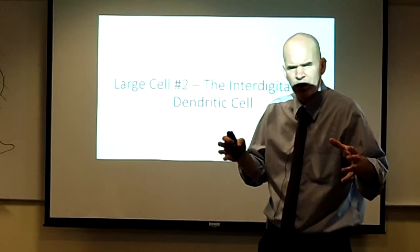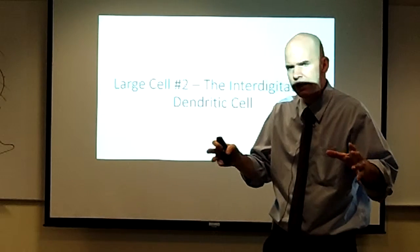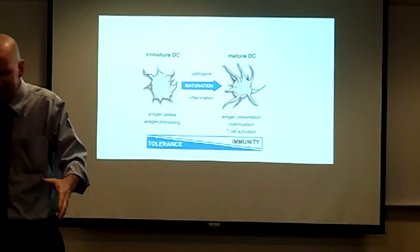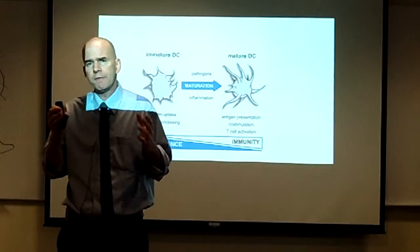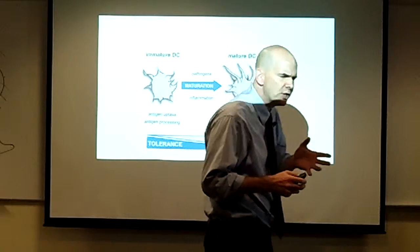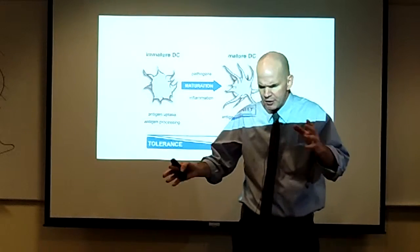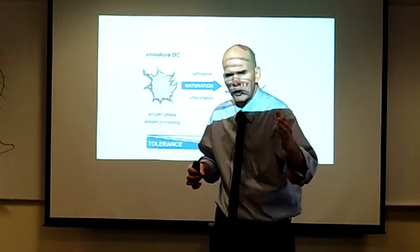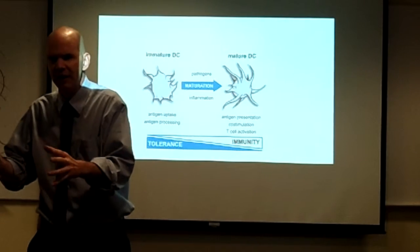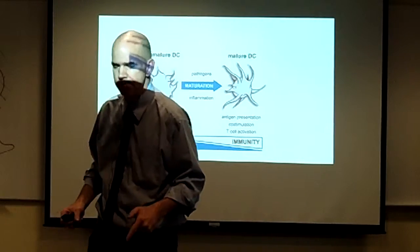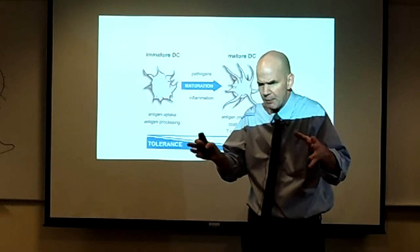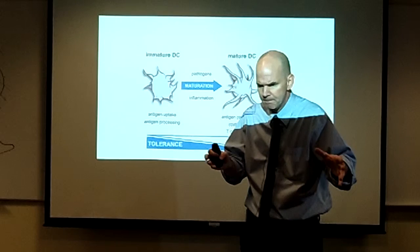As they do this, they sample their environment with macropenocytosis and phagocytosis, looking for particular patterns known as pathogen associated molecular patterns in the material that they're sampling. Like a good veteran beat cop, they don't know particularly who a bad guy is if they see him, but they can recognize that he is a bad guy. Now if a dendritic cell picks up a pathogen that it recognizes as being a pathogen, then it goes on the alert.